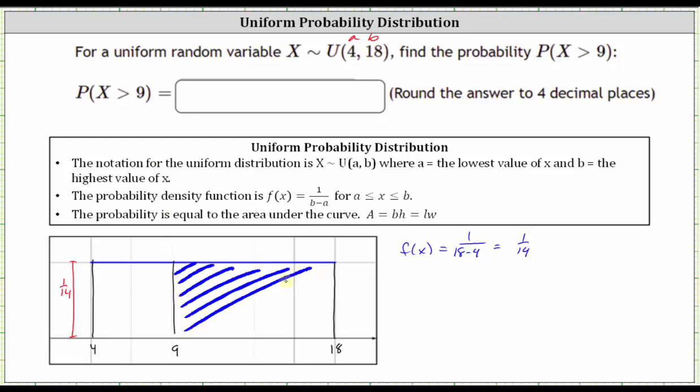And we can find this area because we have a rectangle. So the shaded area is equal to the probability that X is greater than nine, which is equal to the base times the height of the rectangle. Well, the base of the rectangle is 18 minus nine, and the height is always 1/14.